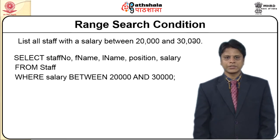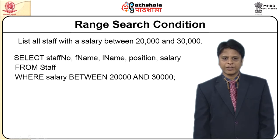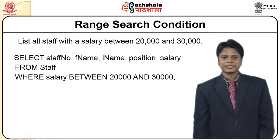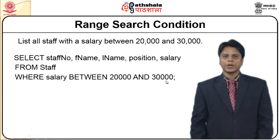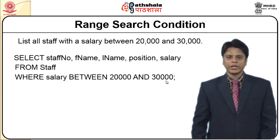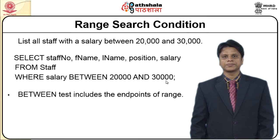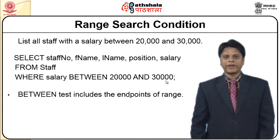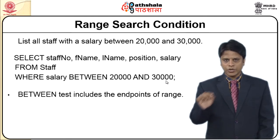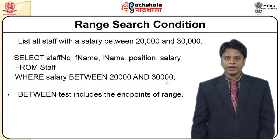How do I write my SQL syntax for this? I write: SELECT staff_number, fname, last_name, position, salary FROM staff WHERE salary BETWEEN 20,000 AND 30,000. I introduce a value of BETWEEN 20,000 AND 30,000, where it is all user-defined. This BETWEEN test includes the endpoints of the range. Many times as an end user, I might have a confusion whether a round-off value of 20,000 or 30,000 will be included as part of my output.